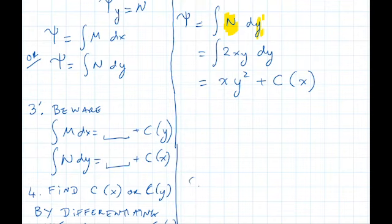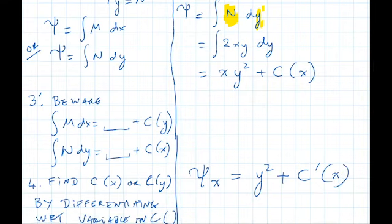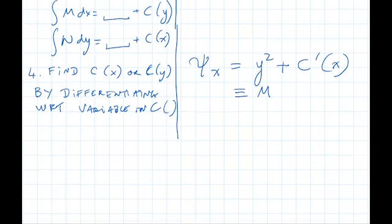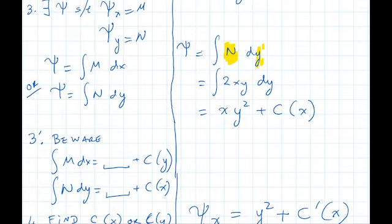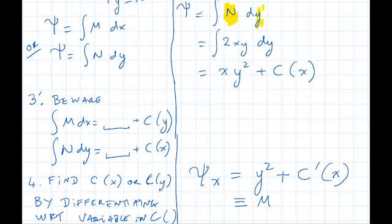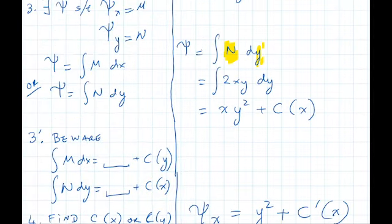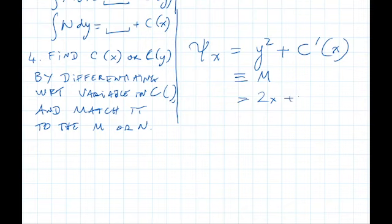I'm going to differentiate psi with respect to x, y squared plus c prime of x. And psi sub x is supposed to be m and match it to the m or n. And it will be the other one as the one you integrated. You integrated n. Down here you use m. You integrate it with respect to y and down here you're taking derivative with respect to x. And what was m? M was 2x plus y squared, which is 2x plus y squared.